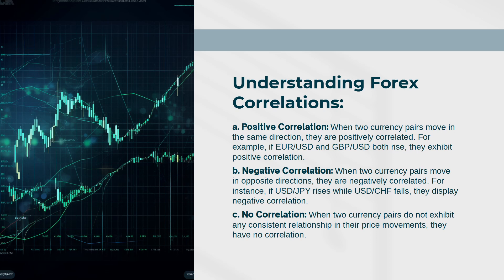Understanding Forex Correlations. Positive Correlation: When two currency pairs move in the same direction, they are positively correlated. For example, if EURUSD and GBPUSD both rise, they exhibit positive correlation.